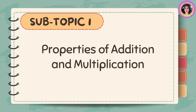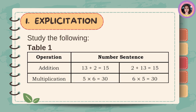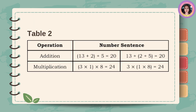Properties of Addition and Multiplication. Study the following. Table 1, Operation and Number Sentence: Addition — 13 plus 2 is equal to 15, and 2 plus 13 is equal to 15. Multiplication — 5 times 6 is equal to 30, and 6 times 5 is equal to 30. Table 2: Addition — (13 plus 2) plus 5 is equal to 20, and 13 plus (2 plus 5) is equal to 20. Multiplication — (3 times 1) times 8 is equal to 24, and 3 times (1 times 8) is equal to 24.